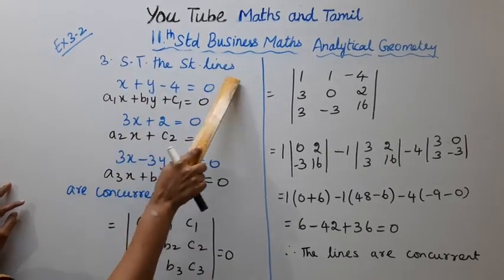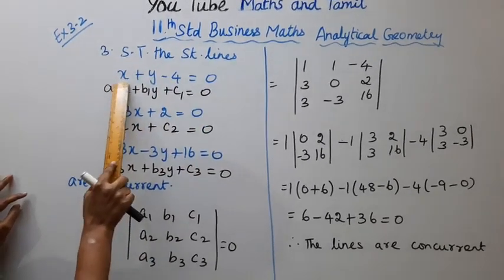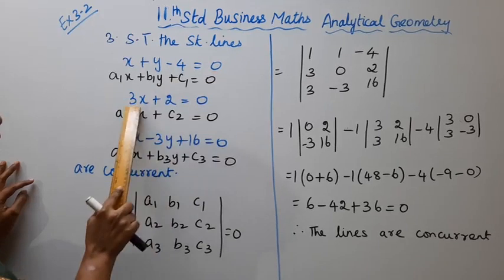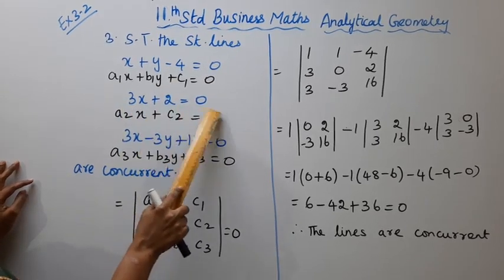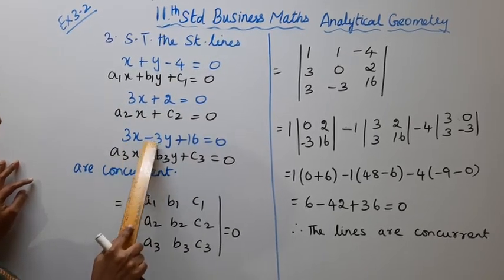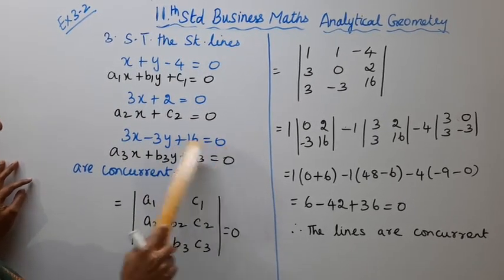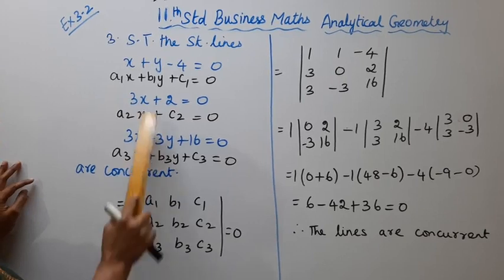Show that the straight lines x plus y minus 4 equal to 0, 3x plus 2 equal to 0, and 3x minus 3y plus 16 equal to 0 are concurrent.